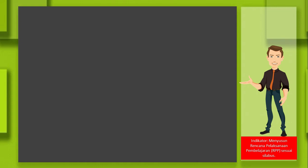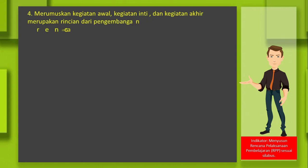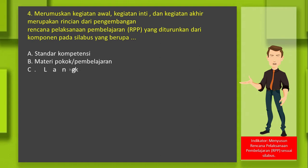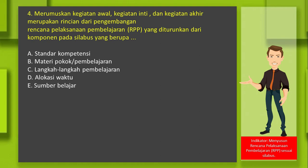Indikator menyusun rencana pelaksanaan pembelajaran sesuai silabus. Contoh soal nomor 4: merumuskan kegiatan awal, kegiatan inti, dan kegiatan akhir merupakan rincian dari pengembangan rencana pelaksanaan pembelajaran yang diturunkan dari komponen pada silabus yang berupa? A. Standar kompetensi, B. Materi pokok atau pembelajaran, C. Langkah-langkah pembelajaran, D. Alokasi waktu, E. Sumber belajar. Jawabannya adalah C: langkah-langkah pembelajaran.